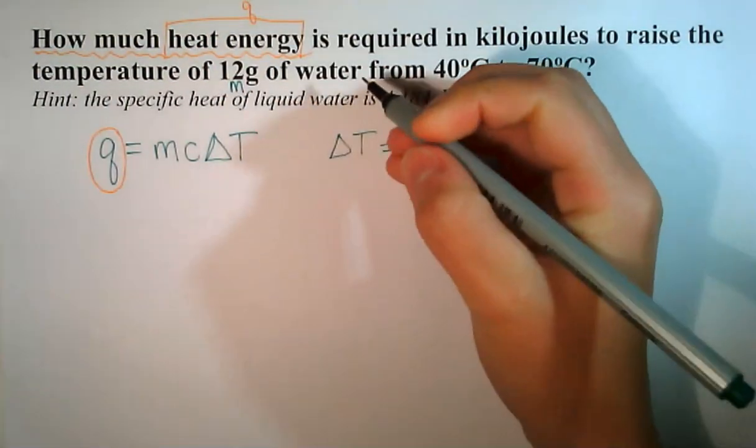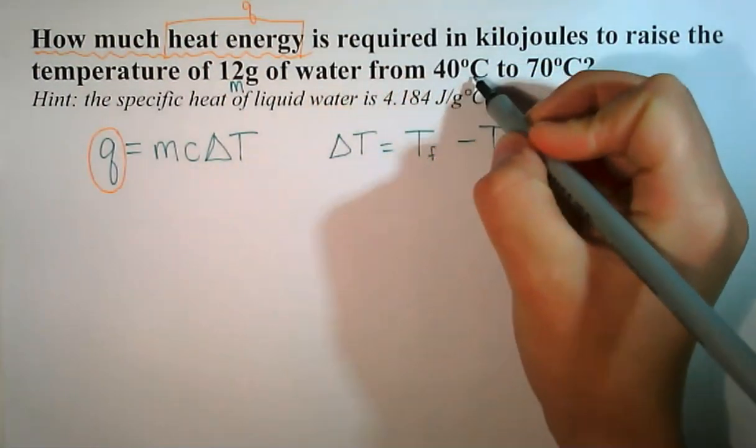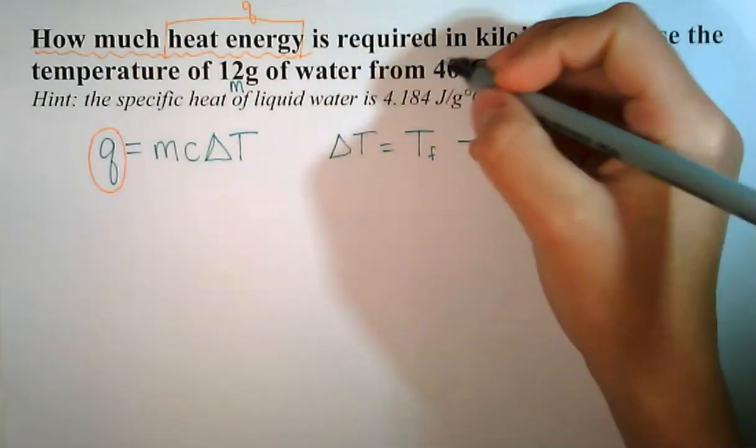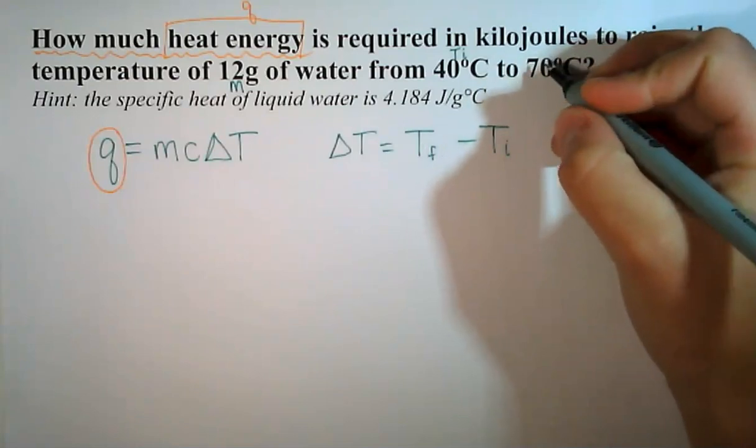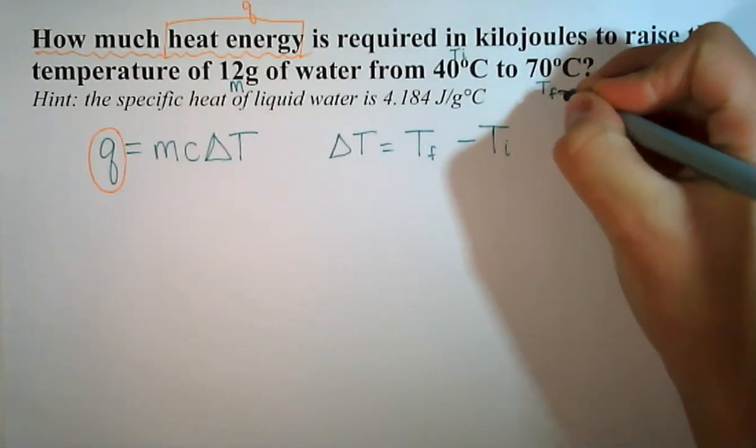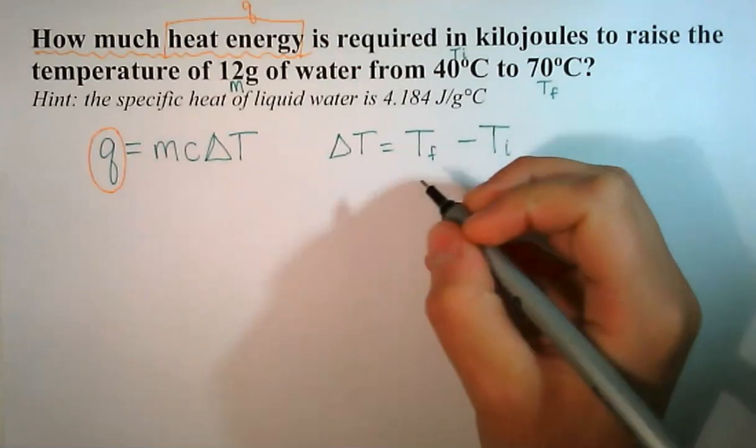From 40 degrees, that means that was our initial temperature, so our T initial, to 70, so our T final's right there. So let's first solve for delta T.